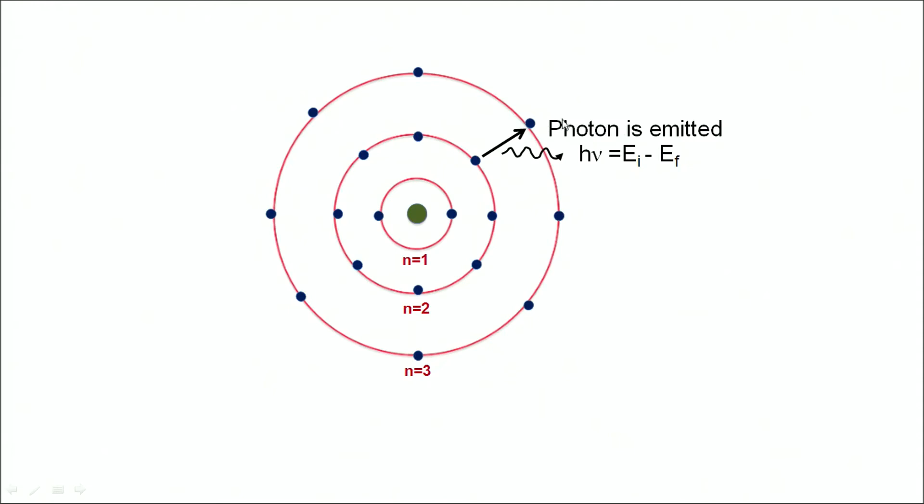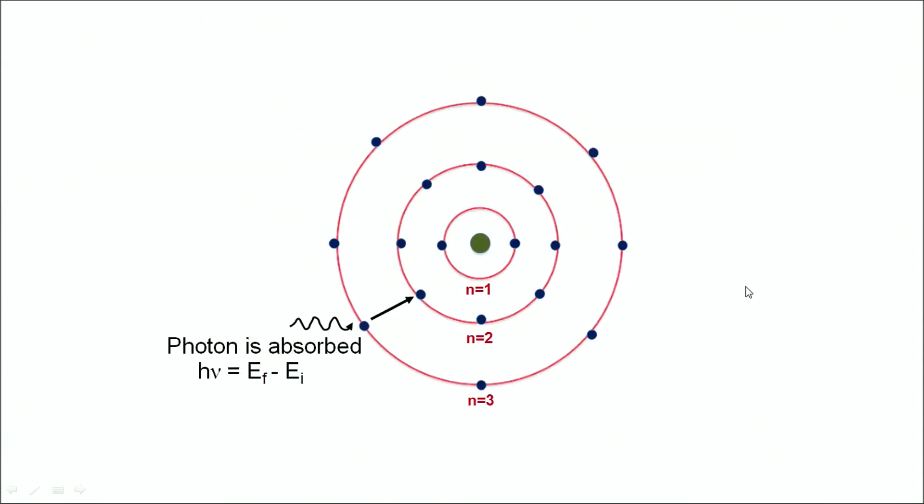The converse of this phenomenon is the absorption of photon. That is, an electron in the outermost orbit absorbs an energy hν which is equal to Eₓ - Eᵢ.